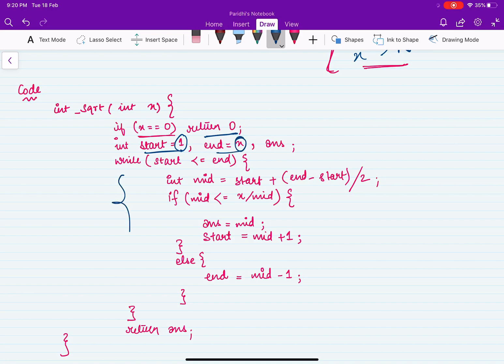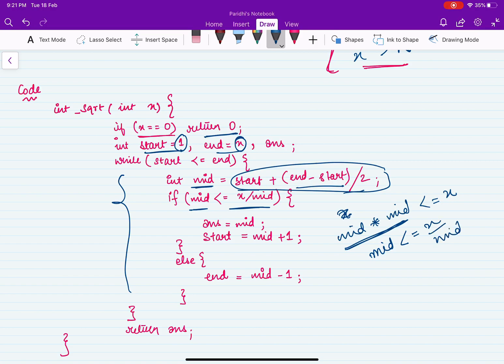Now this is going to be the while loop for the binary search. We will find the mid, so start plus n minus start by 2. We have found our mid like this way because this will avoid overflow. And if mid is less than equal to x by mid, what this means? That if mid into mid is less than equal to x. Now this could cause overflow, therefore we will write it like this. So first we have reduced the value and then we are checking.